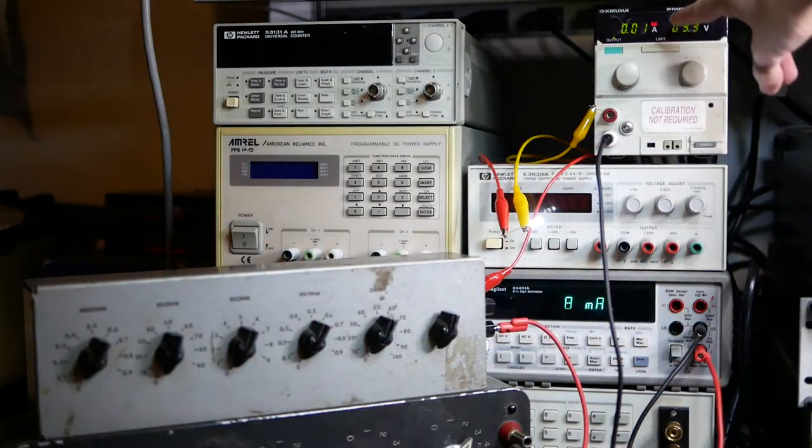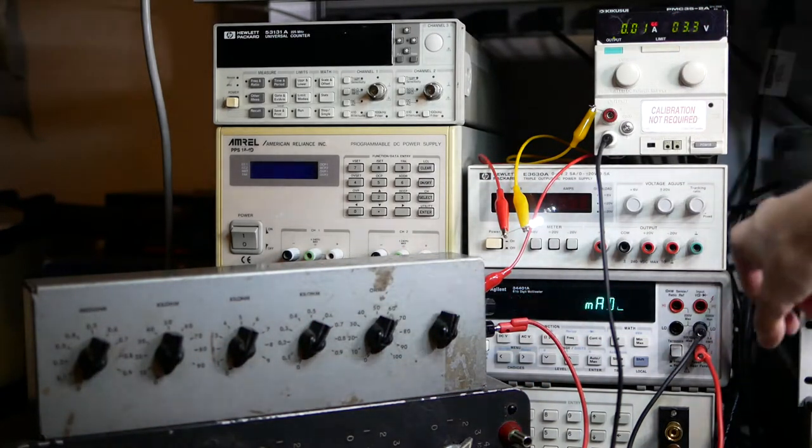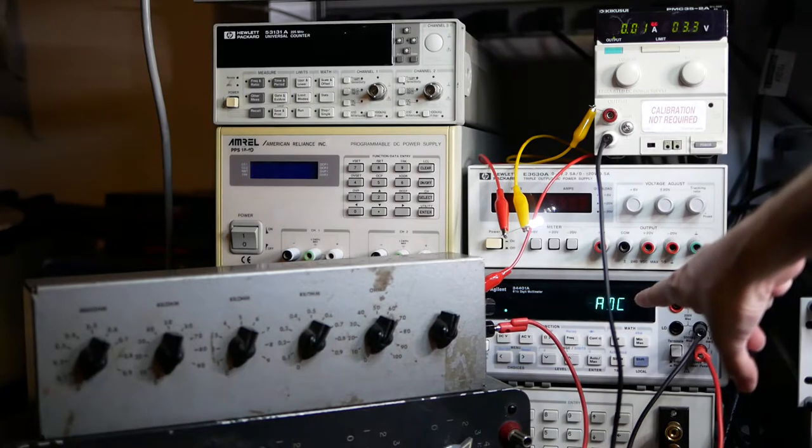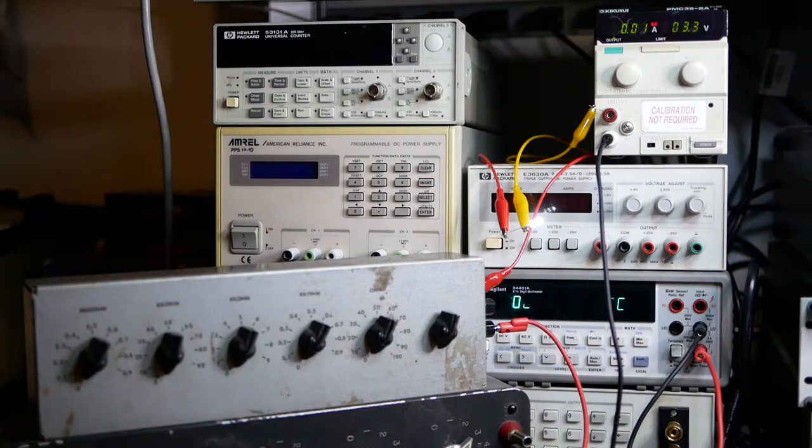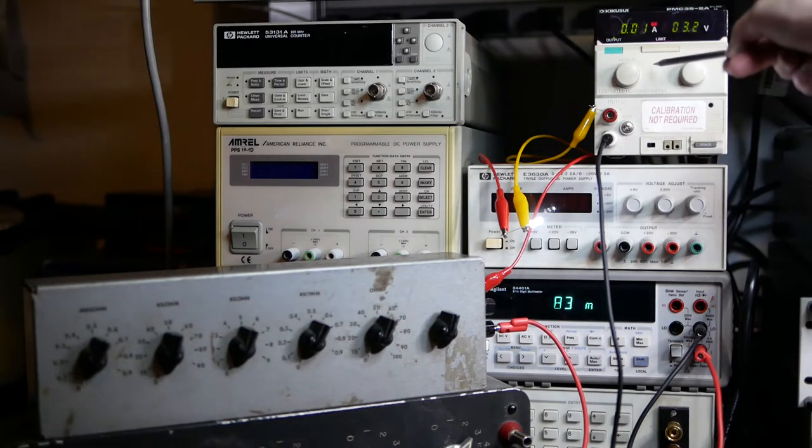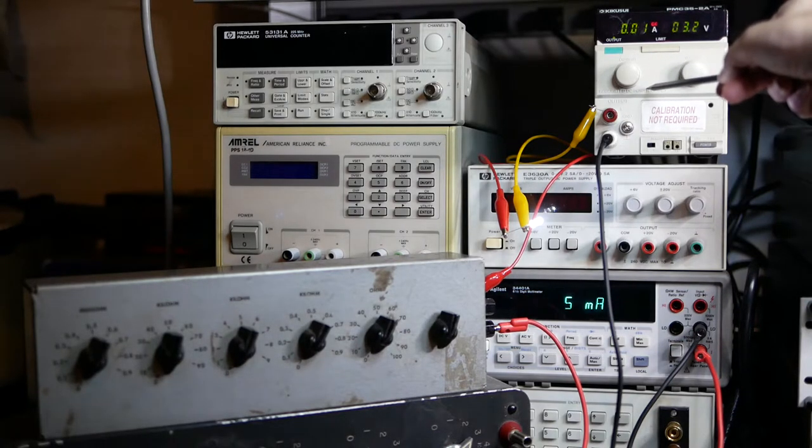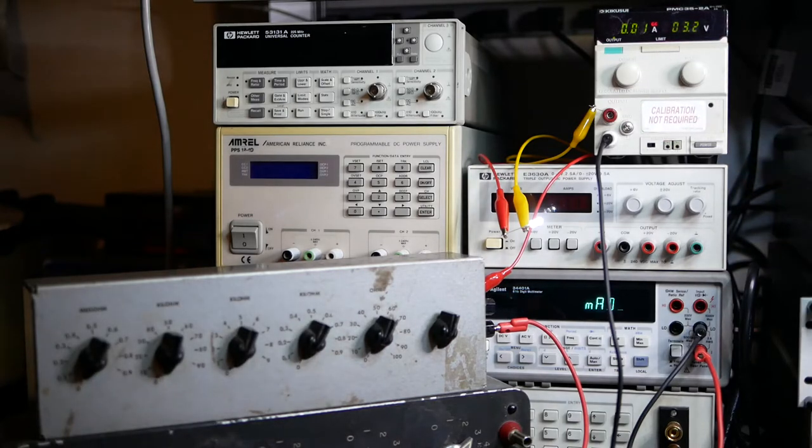So here we have the power supply switches to constant current mode. The current jumps to about 25 milliamps and the LED is quite bright. So this is still within the safe operating parameters for this LED. It's below 30 milliamps, but it's definitely not good. If I did not have my current limit set appropriately on this power supply, I might have blown up the LED.